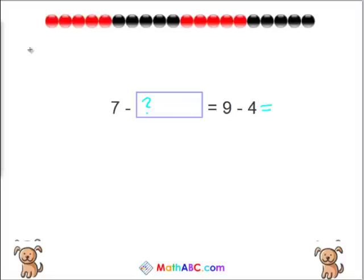Well if that's a little difficult we can always look to the string of beads. Let's count to 9, 5, 6, 7, 8, 9, and then we cross off 4. 1, 2, 3, 4. How many beads are left over? Yes, 5. 9 minus 4 equals 5.